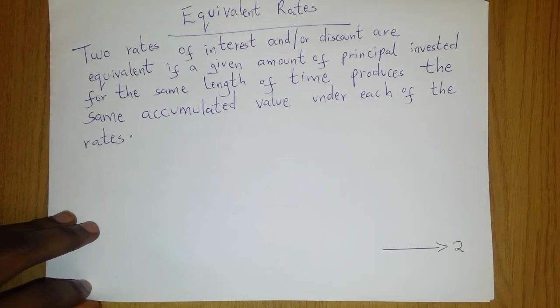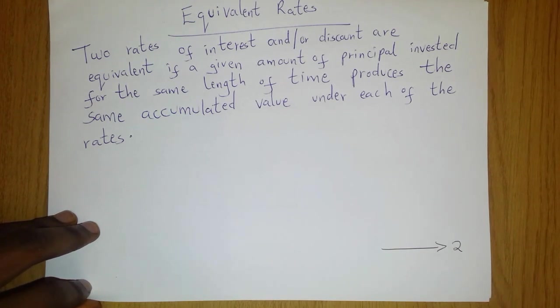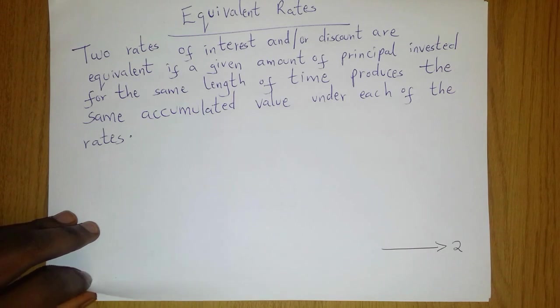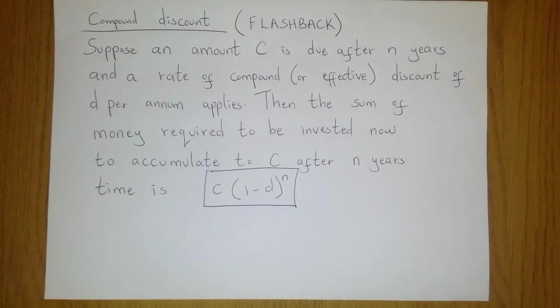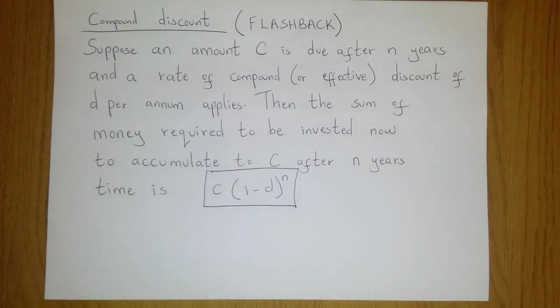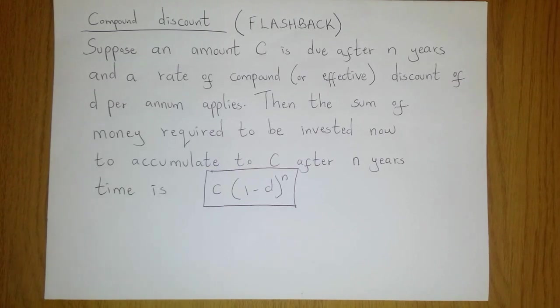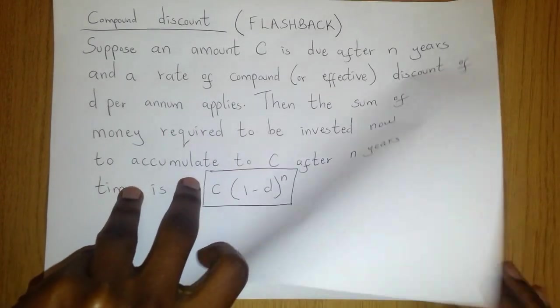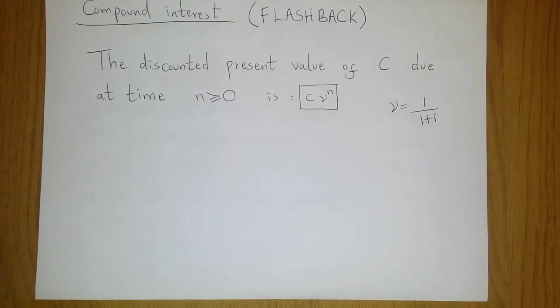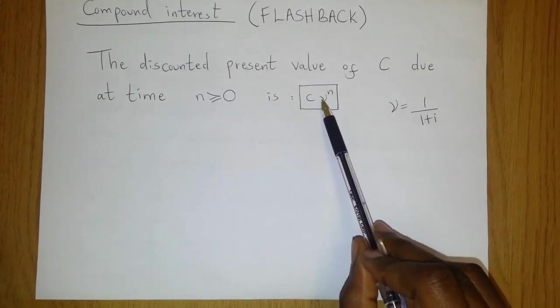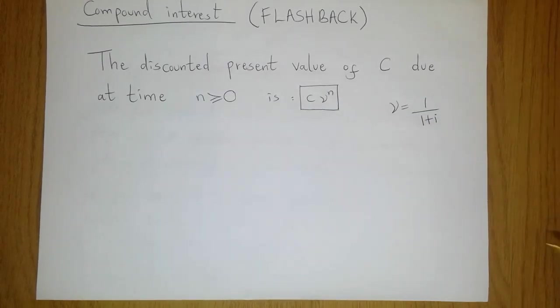Now we have already looked at two different methods of obtaining discounted present values of a payment, and one of the methods employed compound interest model while the other one employed the compound discount model. Just to give you a quick flashback, we can remember that in the case of compound discount, if you suppose that an amount C is due after N years and a rate of compound discount of d per annum applies, then the sum of money required to be invested now to accumulate to C after N years is given by that. While in the other case of compound interest we saw that if an amount C is due at time N, the amount that has to be invested at time 0 is simply given by C multiplied by nu raised to the power N where our nu is equal to 1 over 1 plus i.